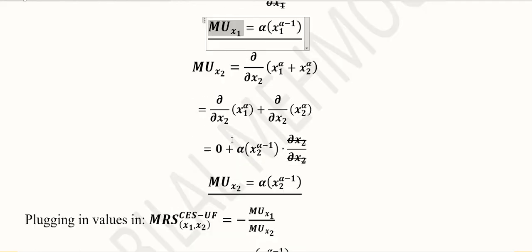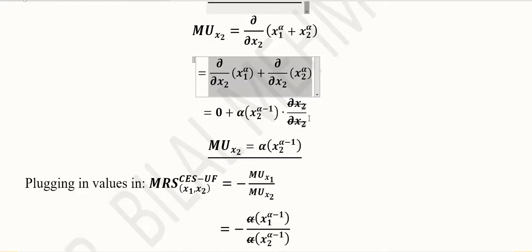Now we can do the same process for x2, that is the marginal utility of x2. And in this case we will differentiate it with respect to x2. And these steps can be understood simply by following the same process that we did in the last derivative for MU_x1. Now the first term will be reduced to zero because there is not any x2 in it.